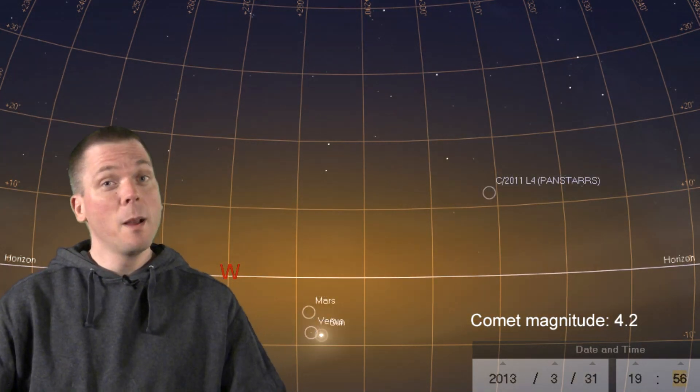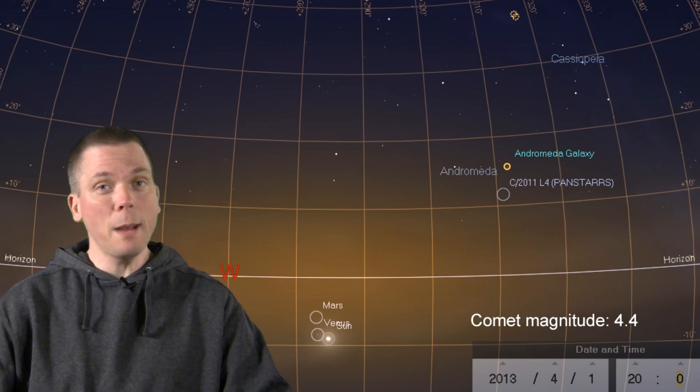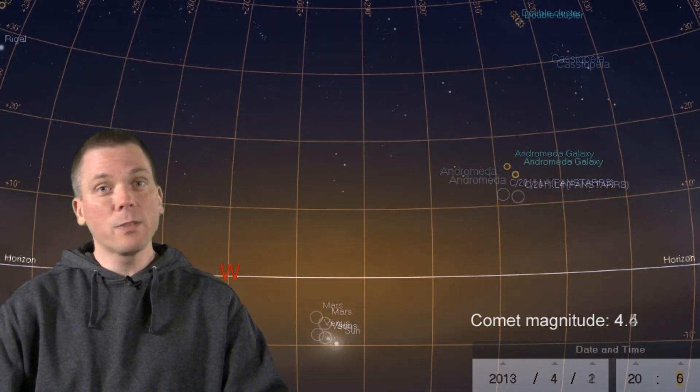Interestingly, the comet swings past the Andromeda galaxy, Messier 31, in early April, even though its magnitude has faded significantly.